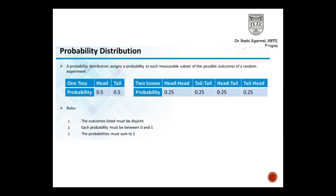Now talking about probability distribution — it assigns possibility to each measurable subset of a possible outcome of a random experiment. Suppose I do a single toss of a coin: there are just two outcomes, head or tail, and the probability associated with each is 0.5. For two tosses, I can have two-squared, that is four values: head-head, tail-tail, head-tail, and tail-head. The probability of each is 0.25, because 0.5 × 0.5 = 0.25. In a probability distribution, I write down all possible outcomes and the associated probability with each outcome.